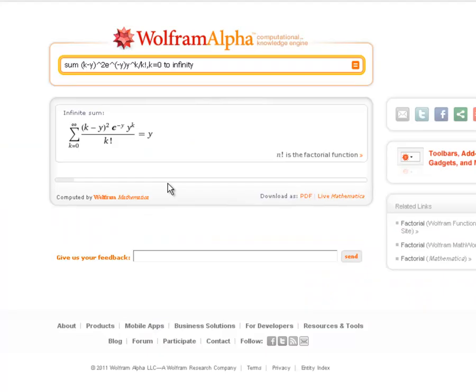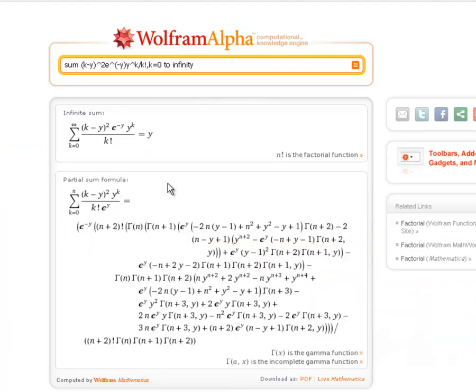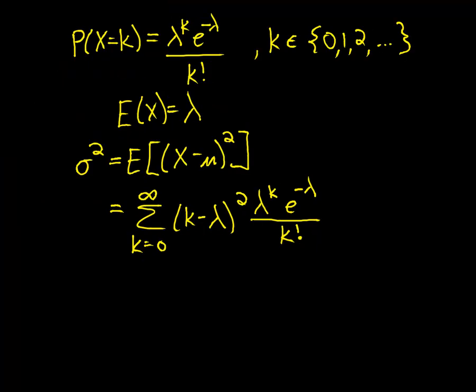All right, and Wolfram Alpha is going to compute this for us, and it finds that we just get y. Wow, that was simple. So remember, y stood for lambda, so our variance for a Poisson random variable is just going to be lambda. Well, let's go back to the blackboard and write that down, and then make sure that we write down the standard deviation as well.